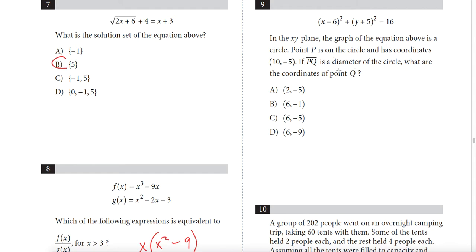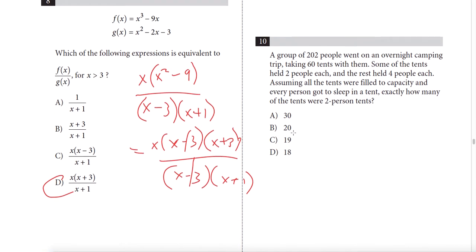Question 9: on the xy-plane, point P is on the circle at (10, −5) and PQ is a diameter. The center is at (6, −5). Since P has y-coordinate −5 and the diameter passes through the center, Q must also have y-coordinate −5. Answer: A.